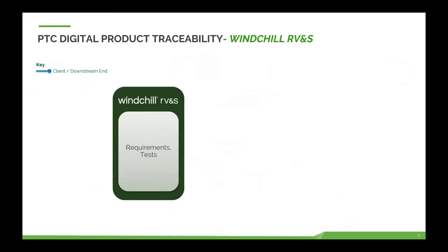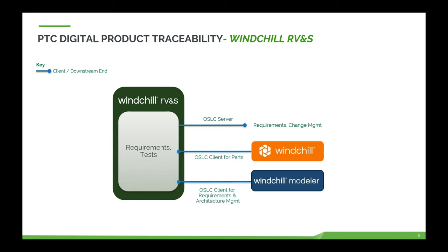In terms of the capabilities we have today: Windchill RVnS focuses on managing requirements and testing information — that information is exposed via an OSLC server that supports the requirements domain and the change management domain. Test artifacts are mapped to requirements, and it's configurable — you can determine what RVnS data maps to the OSLC domains, but out of the box this is how it works.